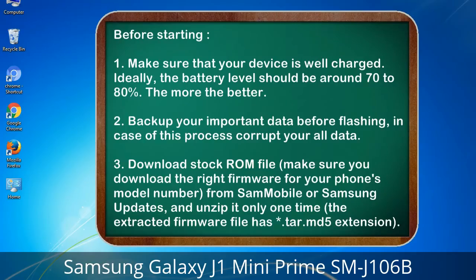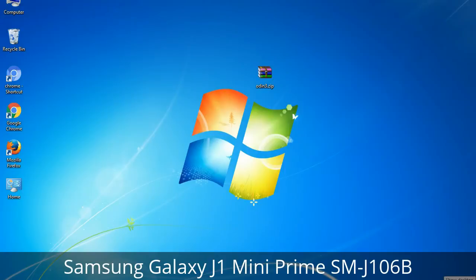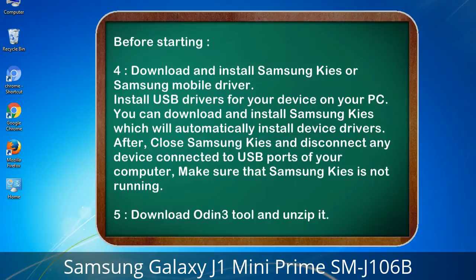Before starting: 1. Make sure that your device is well charged. Ideally, the battery level should be around 70 to 80% — the more the better. 2. Back up your important data before flashing, in case this process corrupts your data. 3. Download the stock ROM file. Make sure you download the right firmware for your phone's model number from Sammobile or Samsung Updates, and unzip it only one time. The extracted firmware file has a .tar.md5 extension.